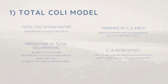Let's look into the total coli model. Total coli in raw water levels has a value of 1,744 MPN per hundred milliliter to 42,175 MPN per hundred milliliter. The percentage of total coli removal is between 79.76% to 99.46%. At the lowest percentage, the smootcher layer has not been maximized, while on days 6 to 14 it's able to eliminate 99.46% of total coli.